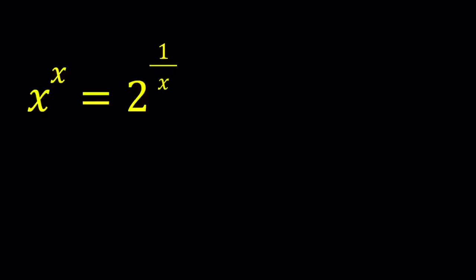First of all, I want you to notice that x cannot be 0. And also, since we have the exponential function x to the power x — and we talked about this before — the base needs to be positive. Because if you have a negative base and a fractional exponent, that causes problems, so that's very problematic. So we're going to assume that x is positive. There are no negative solutions.